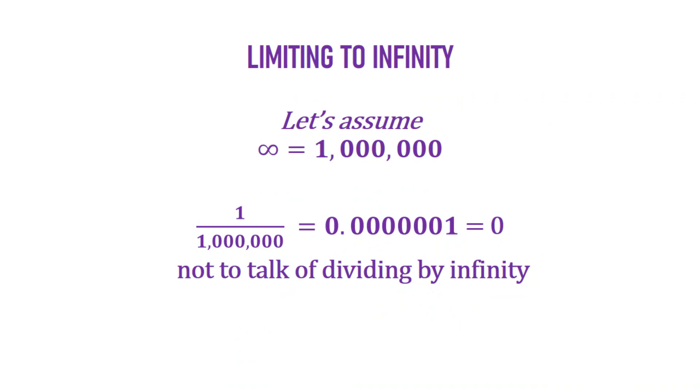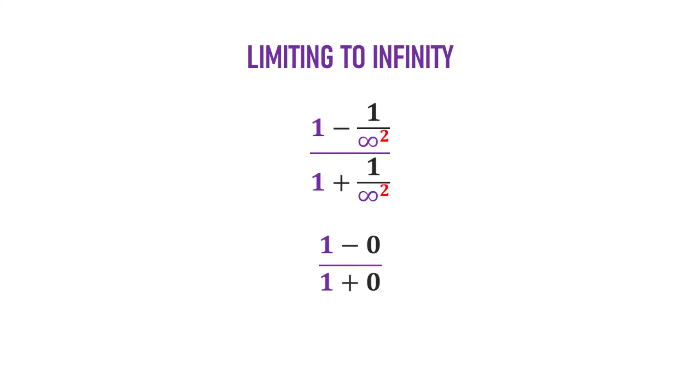Now, imagine now we are to divide by infinity. Then, the 0 just goes unending like that. 0.000000 goes to infinity. Then, we can say 1 divided by infinity squared is as good as 0, right? So, at the end of the day, we get 1 minus 0 divided by 1 plus 0, which is 1 in the end.